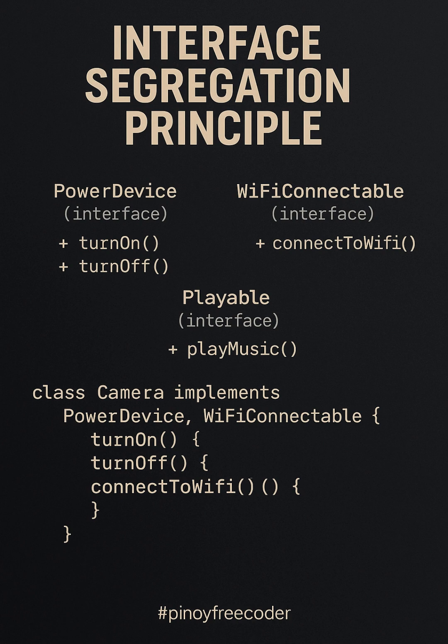We create focused interfaces: PowerDevice, WiFiConnectable, and Playable. Now, the camera class only implements the methods it actually needs, making the code cleaner and more maintainable. This is the essence of the Interface Segregation Principle — designing interfaces that are tailored to the needs of the class.